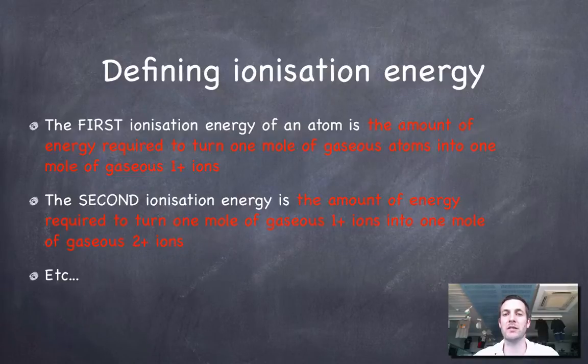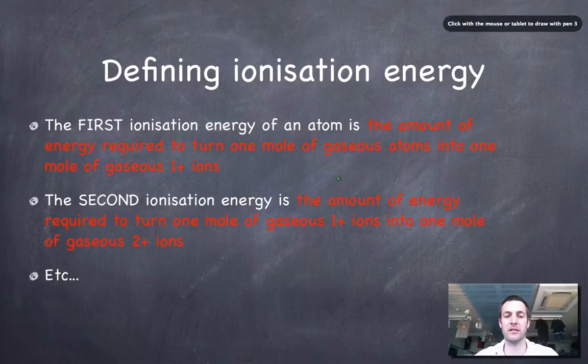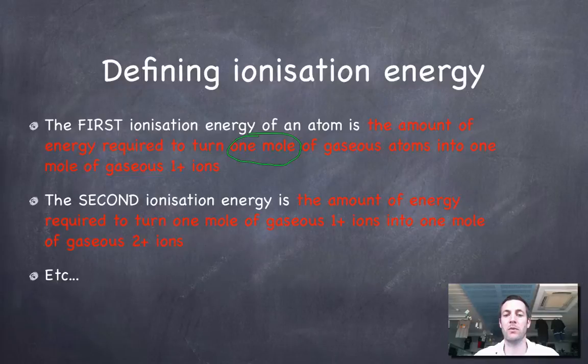This is quite often given as the enthalpy change when one mole of electrons is removed from one mole of gaseous atoms. But if you think about it, if you've got one mole of gaseous atoms and you turn them into one mole of gaseous one-plus ions, then you must have removed one mole of electrons.